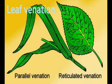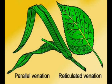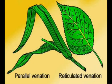Last point: leaf venation. The design made by veins in a leaf is called the leaf venation. There are two kinds of leaf venation: they are reticulate and parallel venation. If the design is net-like on both sides of the midrib, then the venation is called reticulate venation.